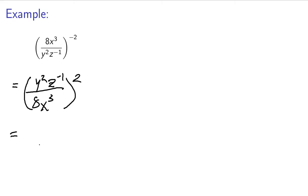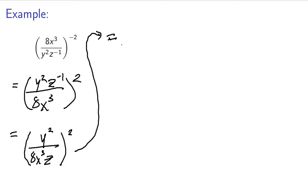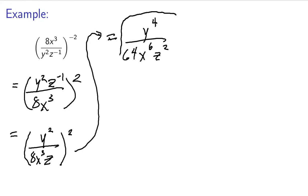Now I see this z to the negative 1, and I want to bring that to the other side of the fraction bar. z to the first is just the same thing as z, so you can change the sign of the exponent by bringing it to the bottom, and z to the first will also just be z. Now I can go ahead and distribute this power of 2. y squared squared is going to be y to the fourth, and 8 squared is going to be 64. x cubed squared is going to be x to the sixth, and z squared is going to be z squared. So the simplified form is y to the fourth all over 64x to the sixth, z squared.